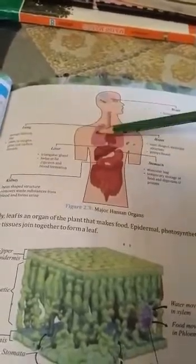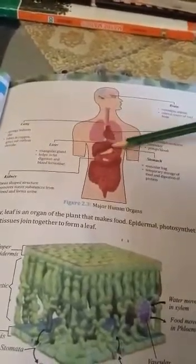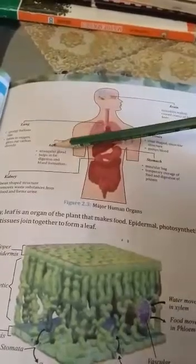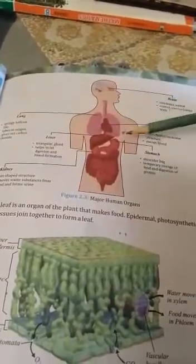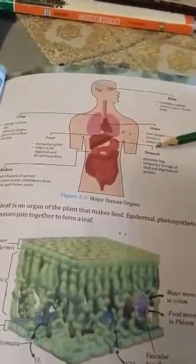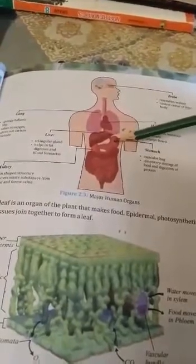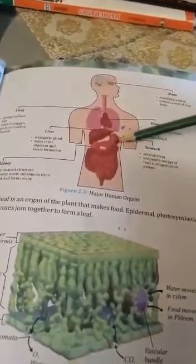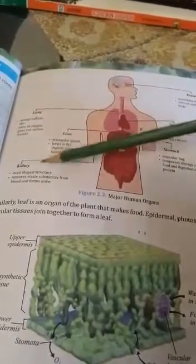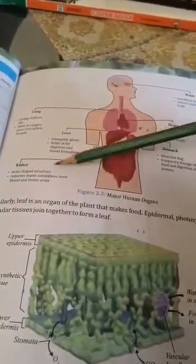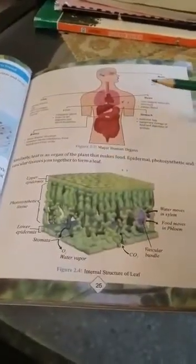Lungs take in oxygen and give out carbon dioxide. The next organ is the liver — it is a triangular gland that helps in fat digestion and blood formation. The next organ is the stomach — it is a muscular bag for temporary storage of food and digestion of protein. The next organ is the kidney — it is bean-shaped and removes waste substances from blood and urine.